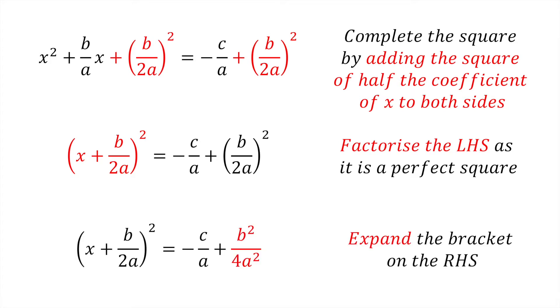First, let's expand the bracket on the right hand side, so the right hand side now becomes minus c divided by a plus b squared divided by 4a squared.